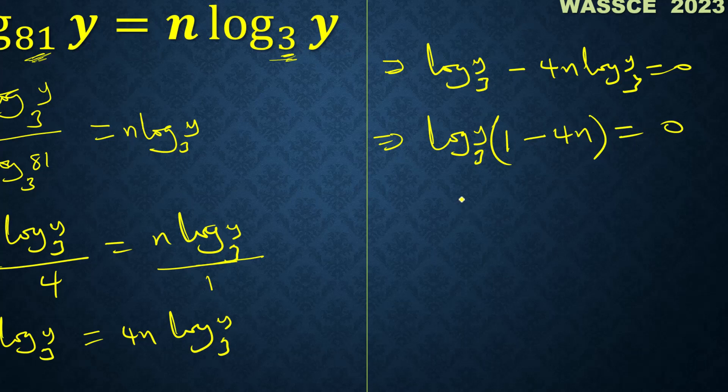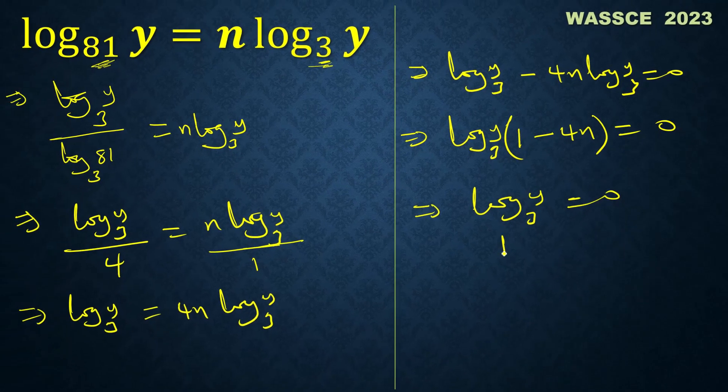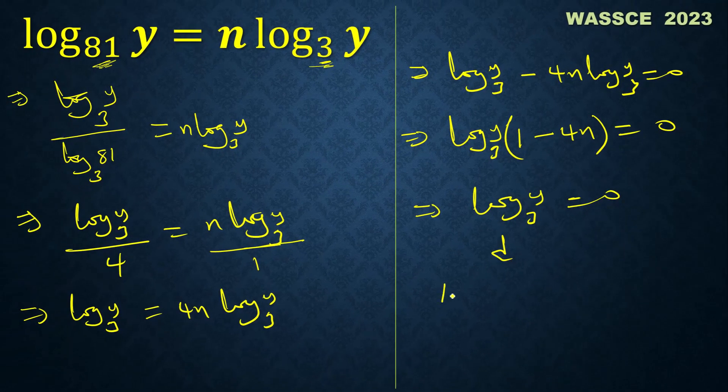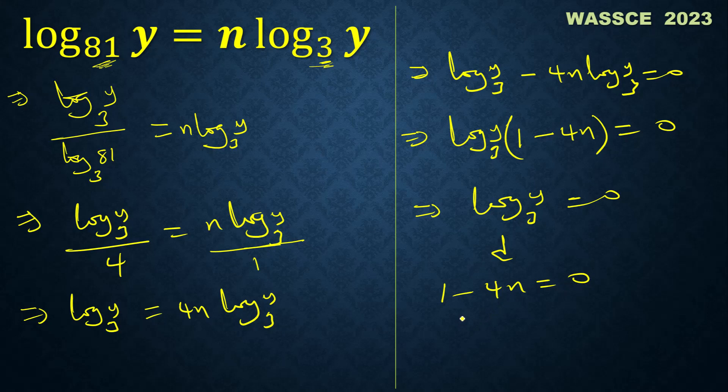What this means is that log y to base 3 equals to 0 and 1 minus 4n equals to 0. So this one is the same as 1 minus 4n equals to 0. 4n equals 1. Divide both sides by 4.